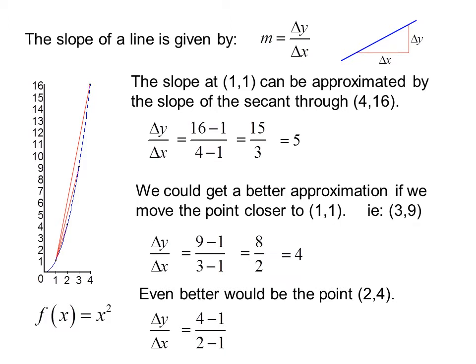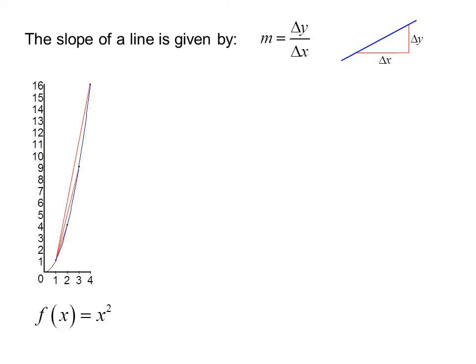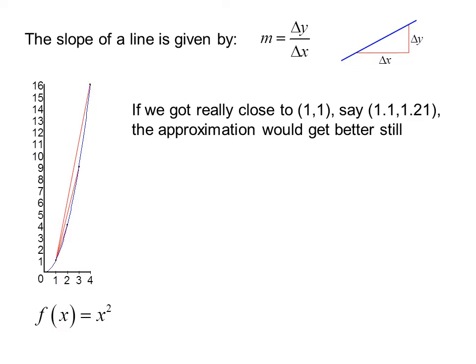The slope is (4 minus 1) over (2 minus 1), or 3 over 1, or 3. So we see as we move the point closer to (1,1), our approximation for the slope looks like it might be getting better.